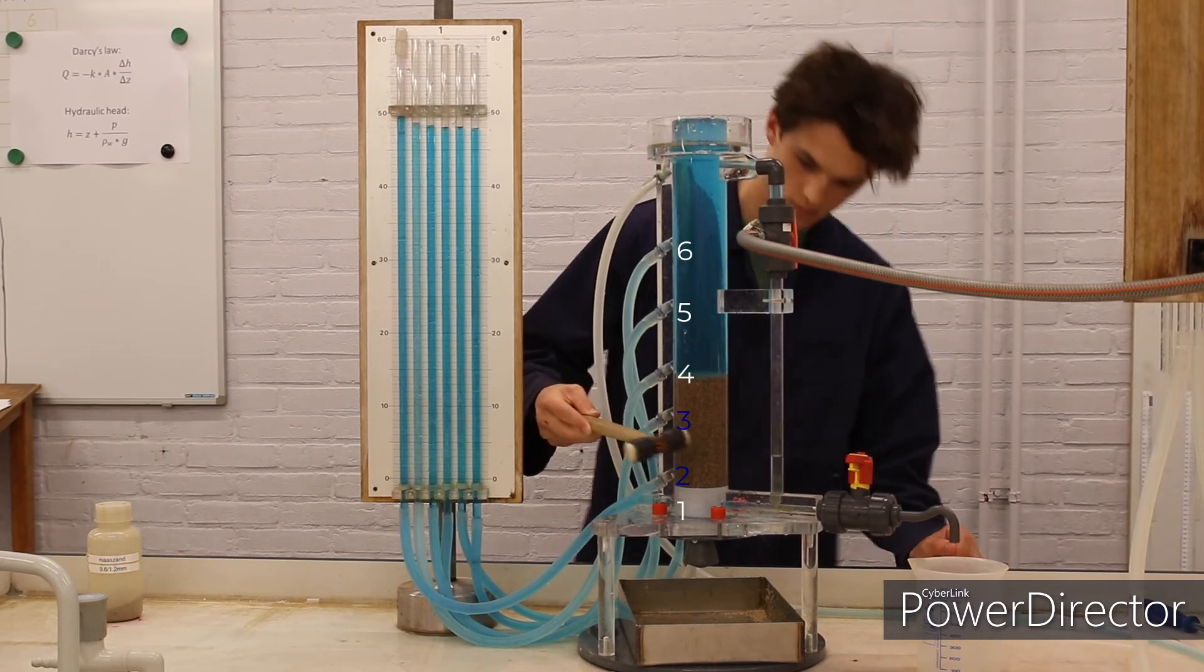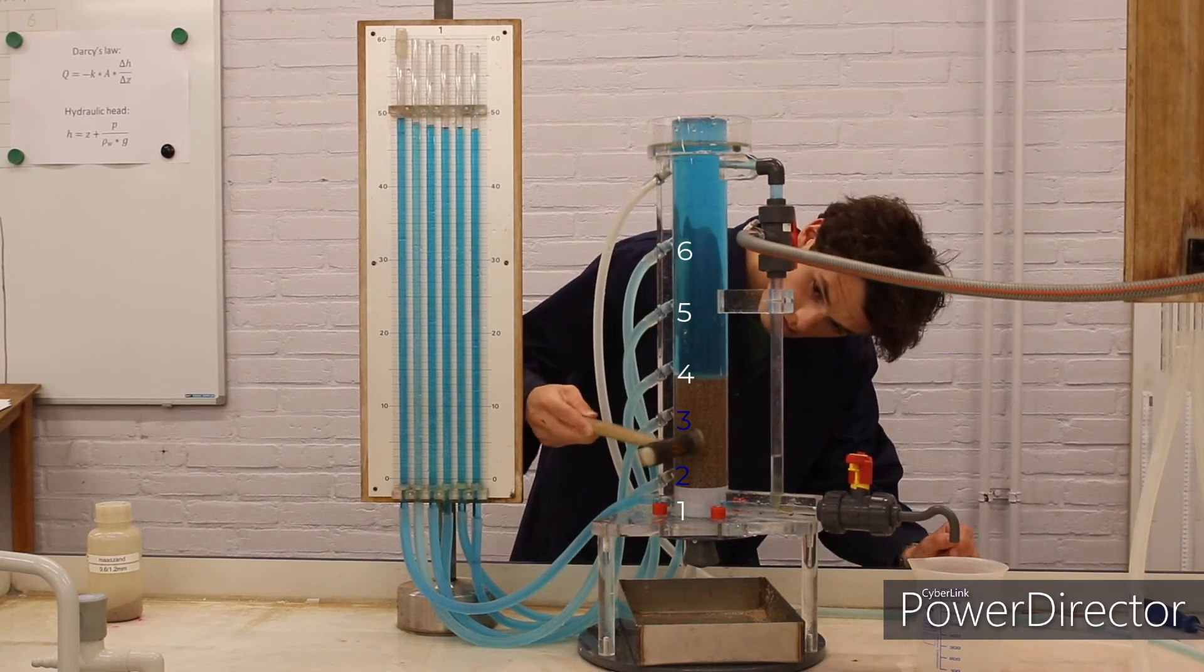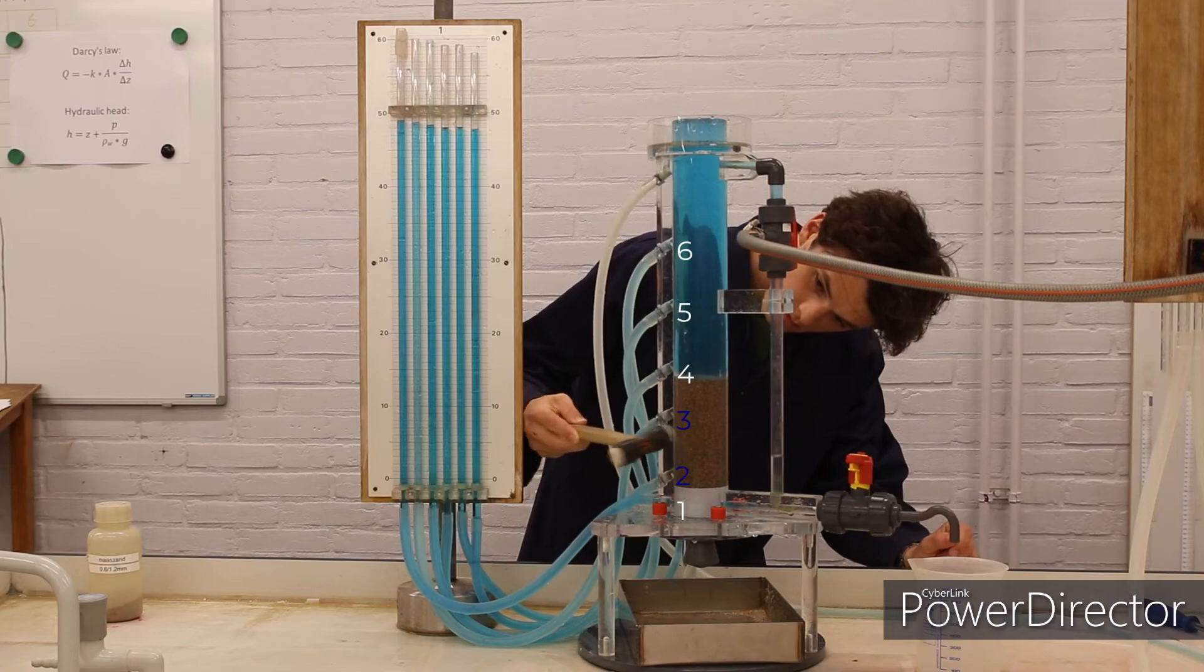After filling the column with coarse sand, use a rubber hammer to slightly consolidate the sand layer and to flatten the top of the sample.